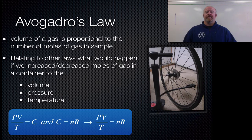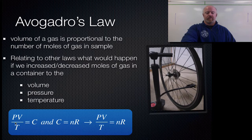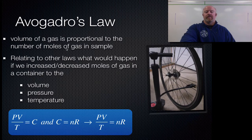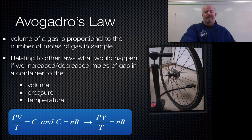So temperature is inverse compared to the other two variables. Going back to our original constant: pressure and volume are inverses of each other, so they're both proportional to the amount of gas, whereas temperature is the inverse. Meaning if you want to add more particles and don't want to change pressure and volume, you have to cool it down. So when you add more particles, you have to change something: either volume goes up, pressure goes up, temperature has to be cooled, or some combination of all three.